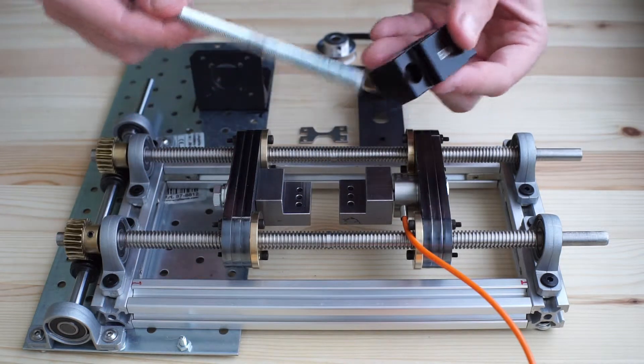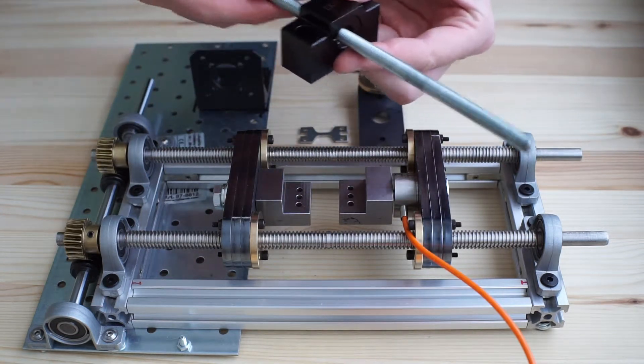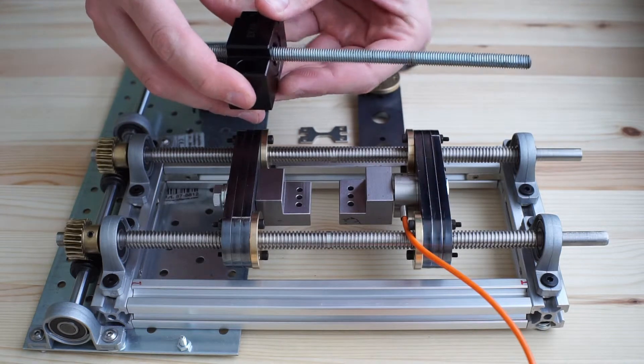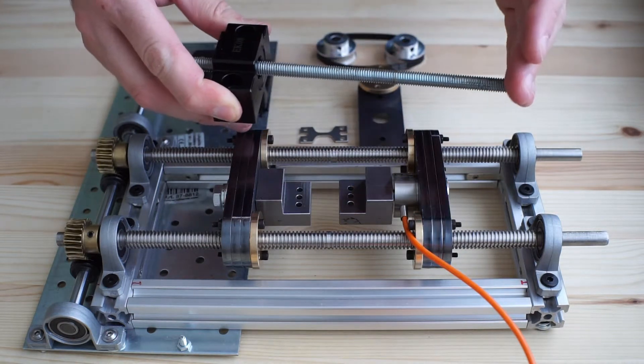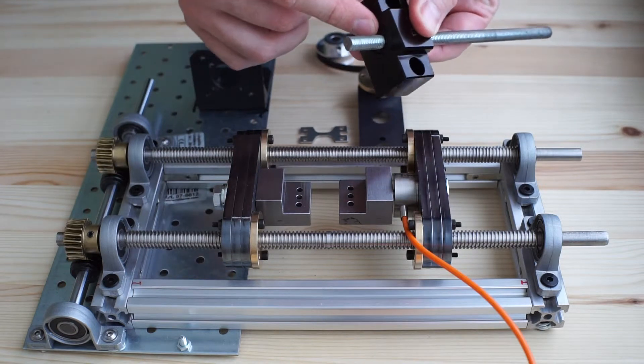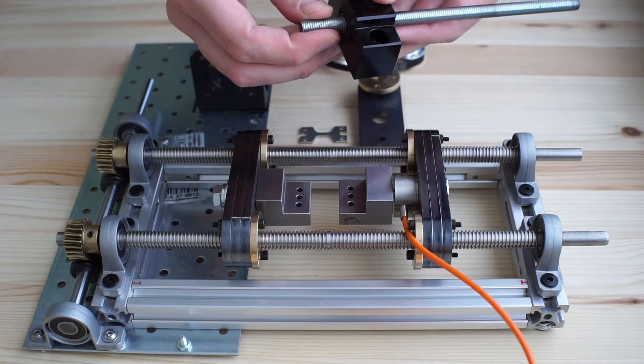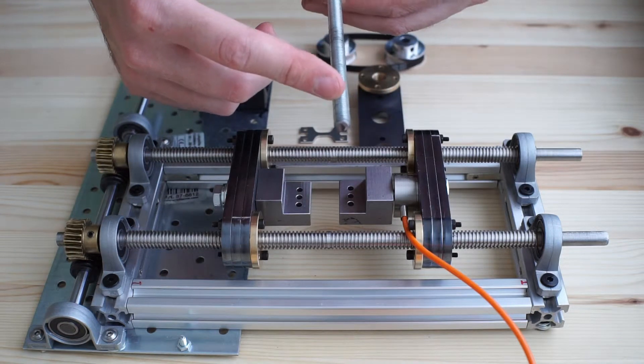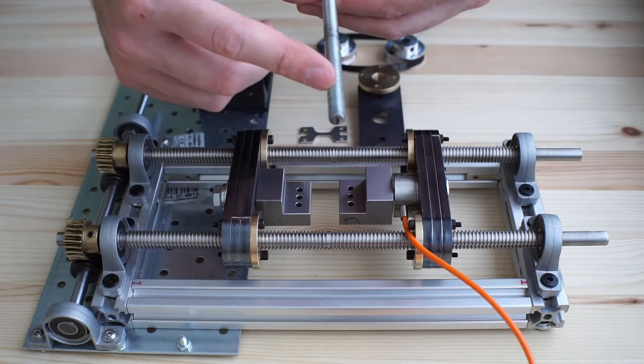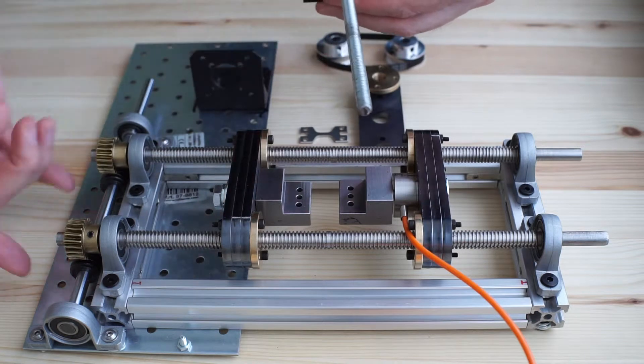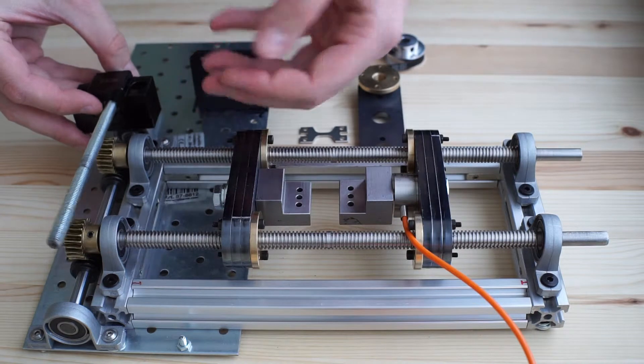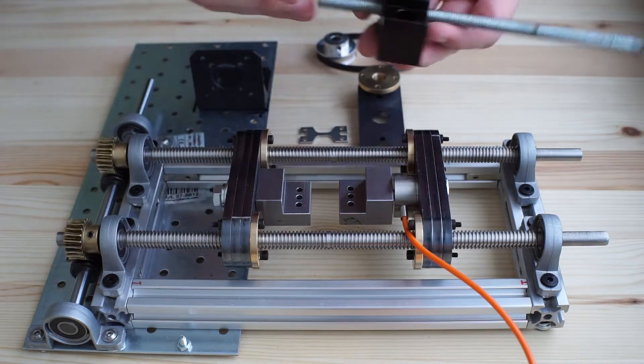So I have a threaded rod here now, this will be supported by the bearings. There will be two bearings, one here, one at the other end, and then there will be a locking nut at the end of this threaded rod. And I will attach the two worm gears on the corresponding places like I attached it to this shaft.